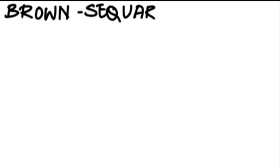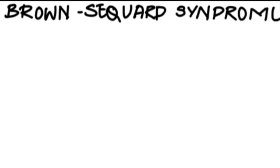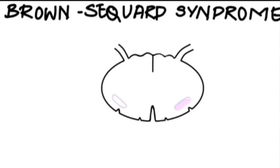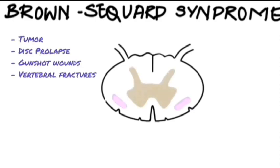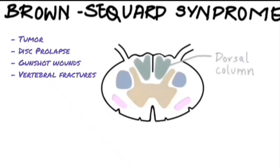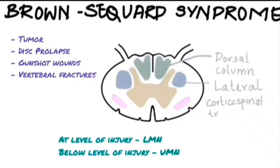Ipsilateral hemiplegia can occur in spinal cord lesions where there is damage to one half of the spinal cord. This is called Brown-Séquard syndrome. This can occur either due to compression of the spinal cord by a tumour or prolapsed intervertebral disc, or partial transection of the spinal cord by gunshot wounds or vertebral fractures where the fractured pieces may injure the spinal cord. It presents as an LMN lesion at the level of injury, but the areas affected below the level of injury show UMN lesion symptoms.